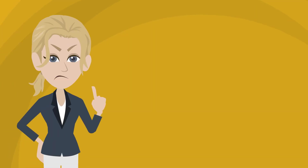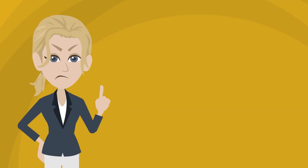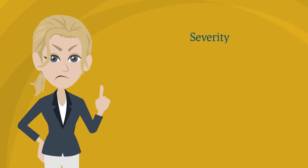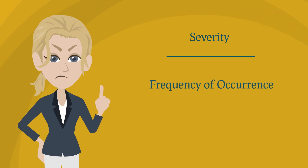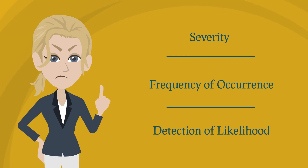An important element of Failure Mode Effect Analysis is analysing the three characteristics of mistakes. 1. Severity: how severe are the mistakes? 2. Frequency of Occurrence: how often do the mistakes occur? 3. Detection of Likelihood: how likely is it that mistakes will be noticed?